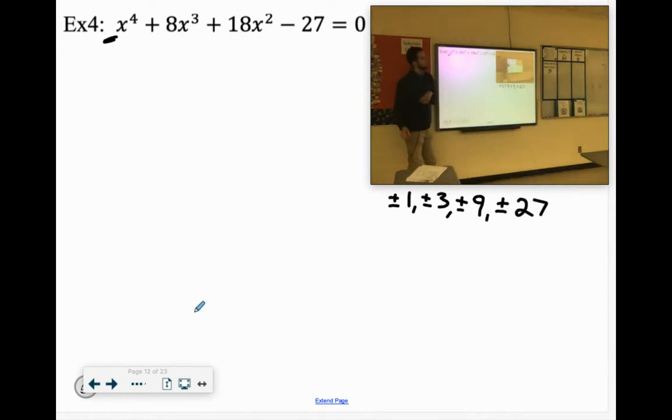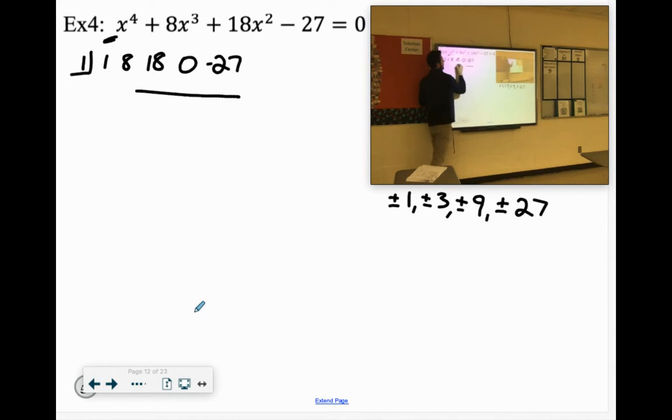So let's try 1. Why not? So we have 1x to the 4th, 8x to the 3rd, 18x squared. We have no regular x's, and then negative 27. So again, puzzle-wise, we've got to get a positive 27 there, which is very possible.